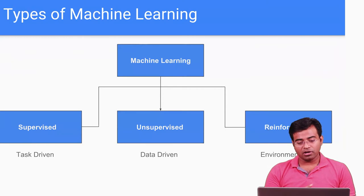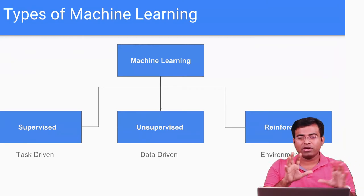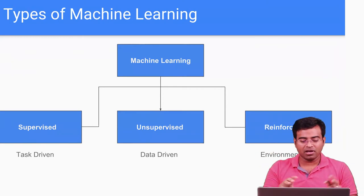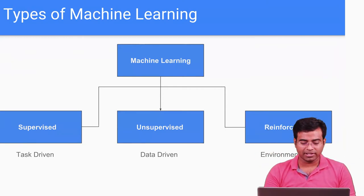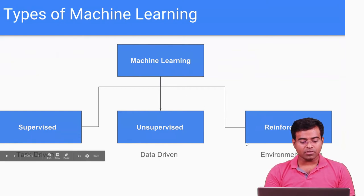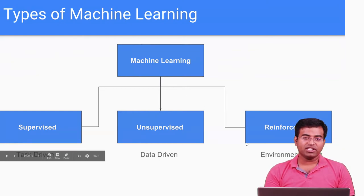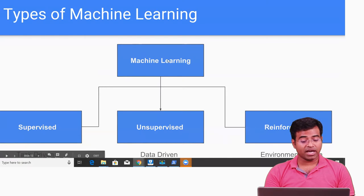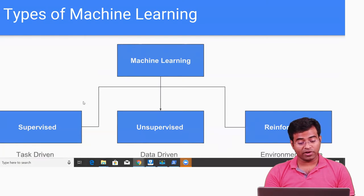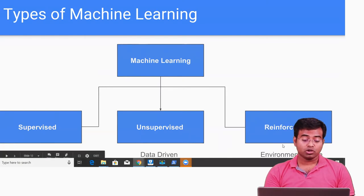Broadly, those are some examples to explain where you could see machine learning. Machine learning is divided into three categories: one is supervised, one is unsupervised, one is reinforced. Supervised means it is task-driven.